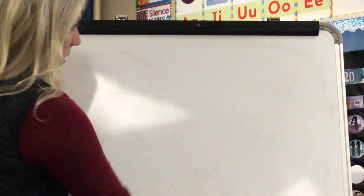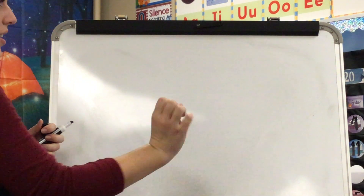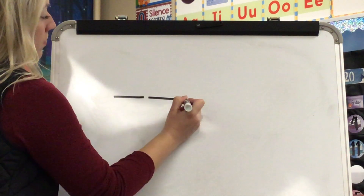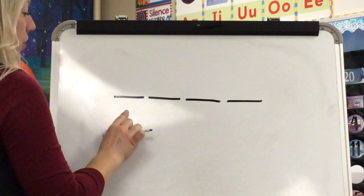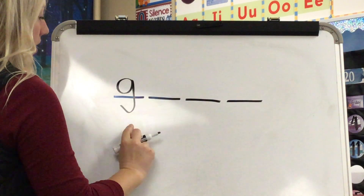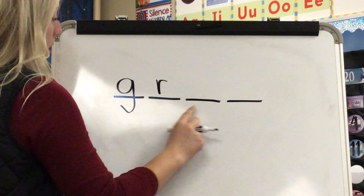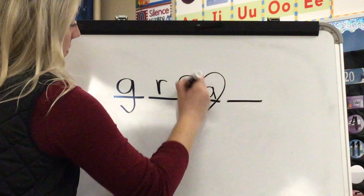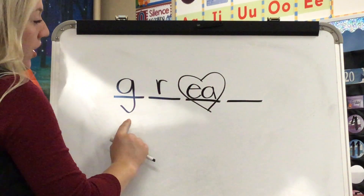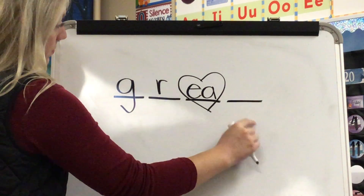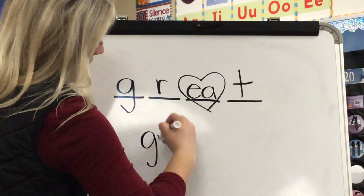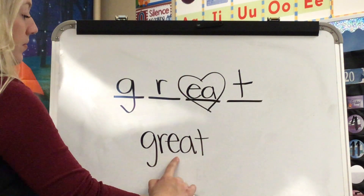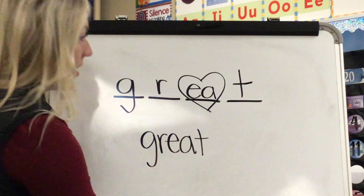Our next new heart word is the word great. What word? Great. Stretch great: G-r-a-t. The A in great is spelled E-A — that's a tricky part you have to know by heart. Final sound? T. Yes, T. This is the word great. Spelled great: G-R-E-A-T. Word? Great. Yes, great.